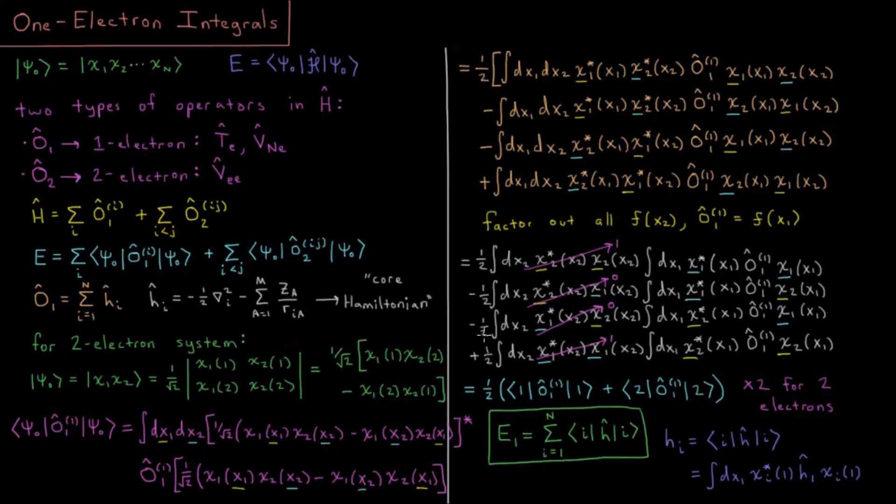Once we do that, we get 1/2 in each of these terms here, and all of the integrals where we get χ₂* χ₂, those are going to go to 1 because this is normalized.